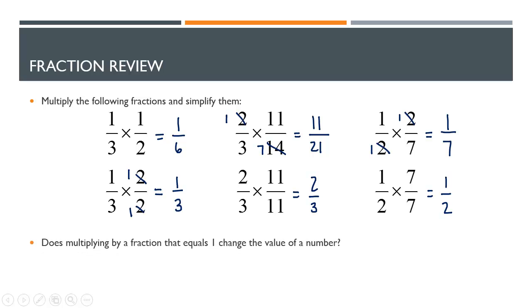Because if we take 1 third and multiply it by 1, which this 2 over 2 equals 1, we still get 1 third. If we multiply 2 thirds times 11 over 11, we get 2 thirds. We get our original number. If we take 1 half and multiply by 7 over 7, we get our original number again, which is 1 half. So here's the key idea here: you can always multiply by 1 without changing a number's value.